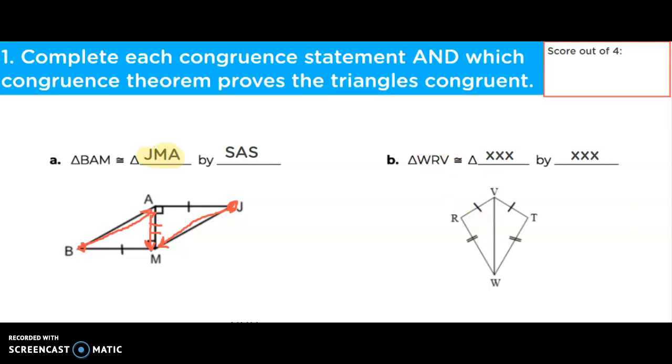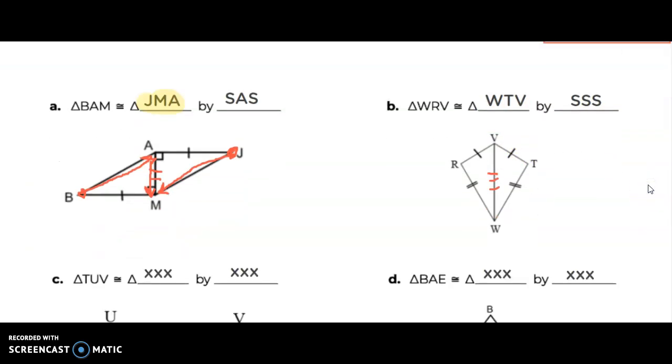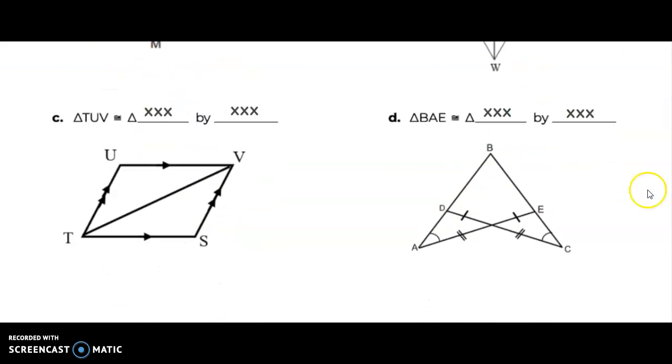Next one, I hope was pretty intuitive. We had a shared side right here. That's the third piece, which means we have a side, side, side congruency. And then if we did WRV, that should mean that we have WTV. Again, that one was pretty intuitive for everybody. We didn't have a lot of mistakes with that one. That was the first one there.